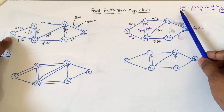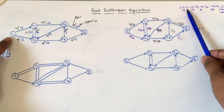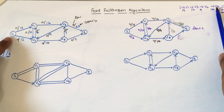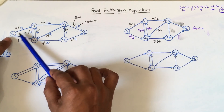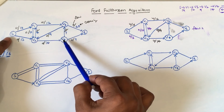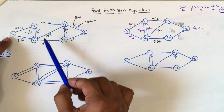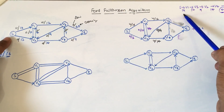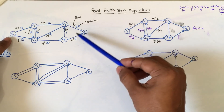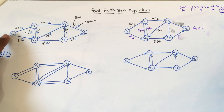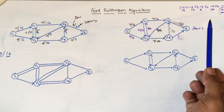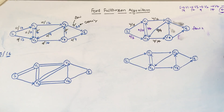One path is given as s to v1, v1 to v3, v3 to v2, v2 to v4, v4 to t. In this path, we look at the maximum capacities available, and we can see that the minimum capacity is from v4 to t — we have only four units that can be transferred. So this is the bottleneck capacity.